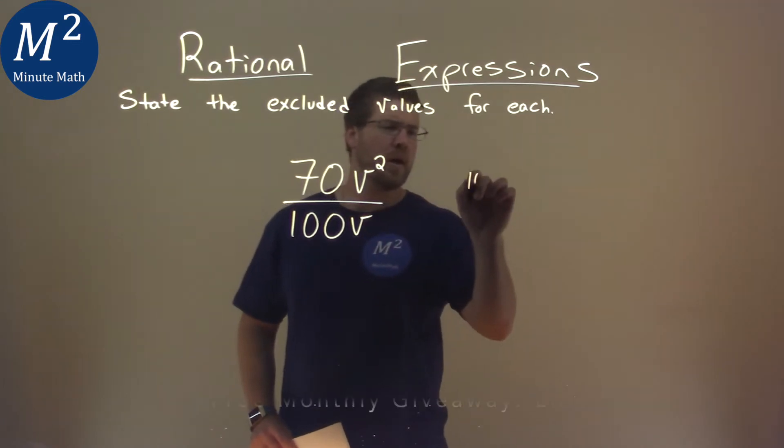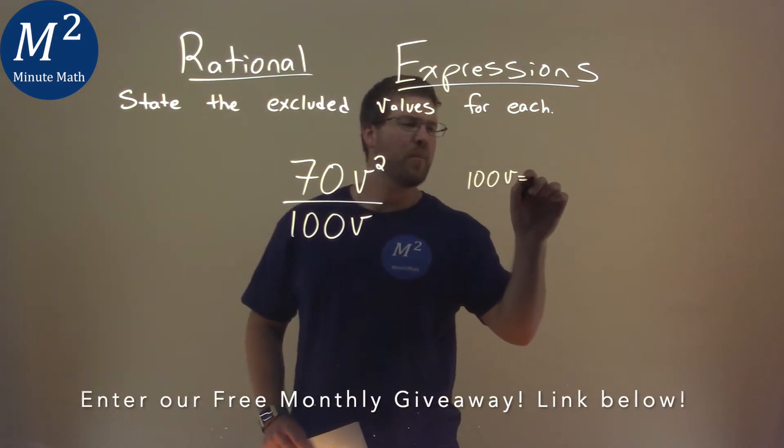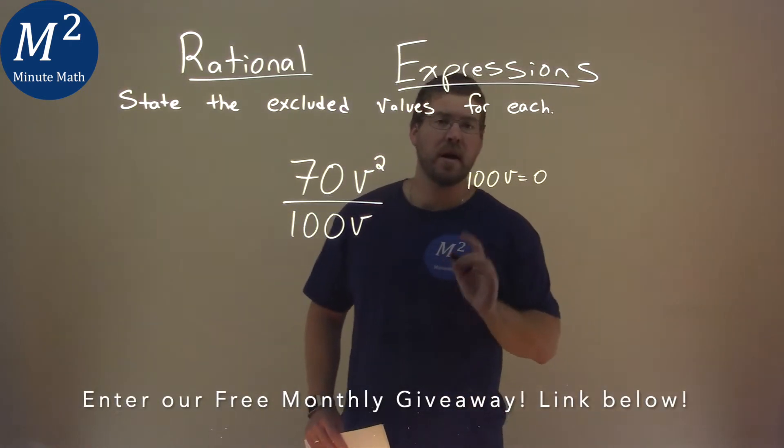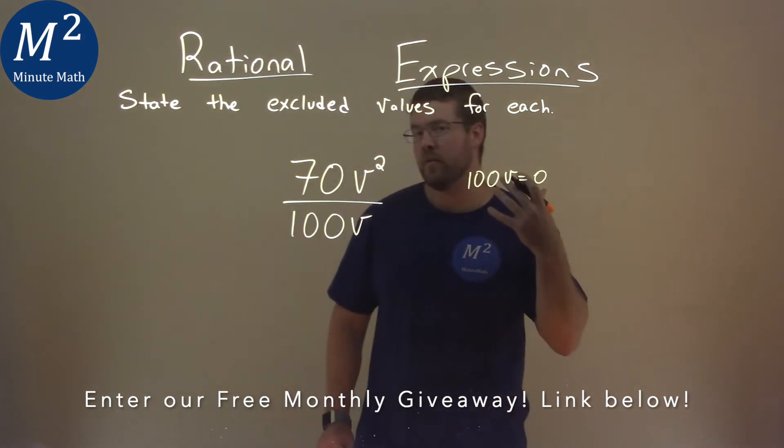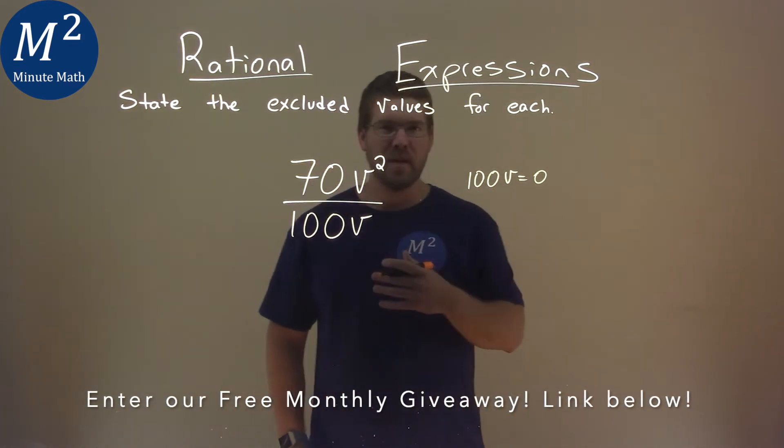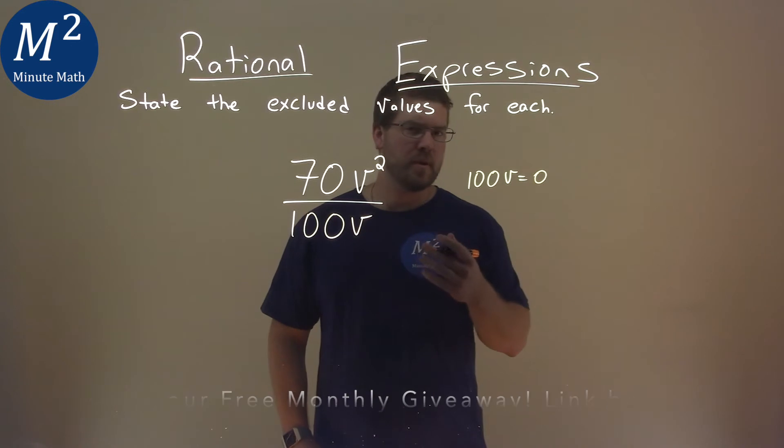So we take our denominator, 100v, and we're going to set it equal to zero. And now we're going to solve to find what value for v makes this expression equal to zero, or the denominator.